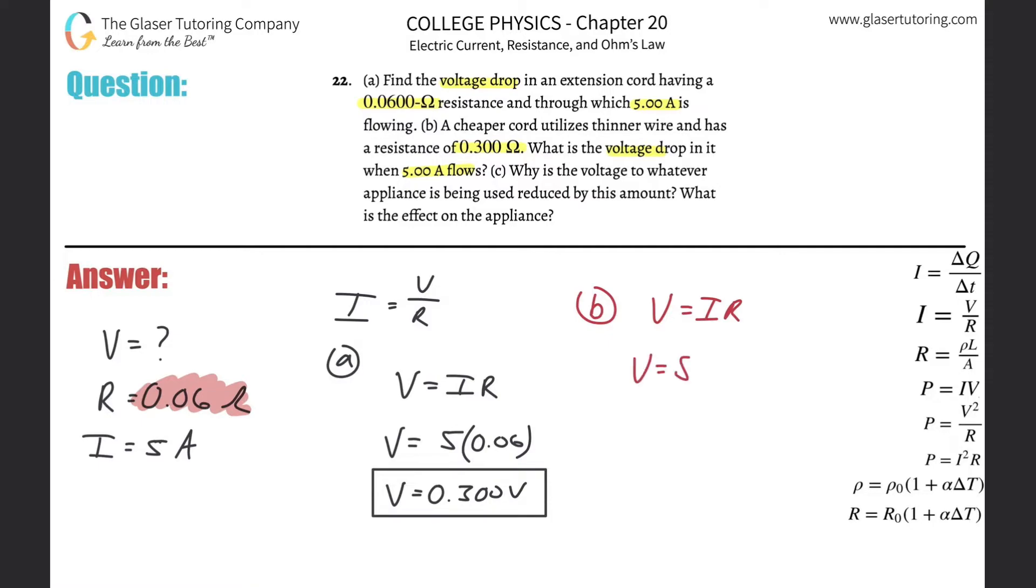The voltage will then be equal to the current. It still stays 5. And the resistance now is going to be 0.3 ohms. So here now, what's basically a third of 5? Well, it's simply going to be 1.5. And that's in terms of volts. So that's now the voltage drop.